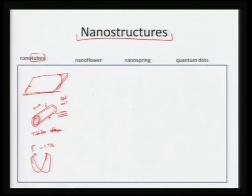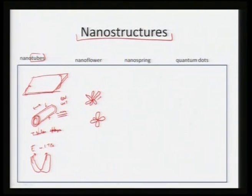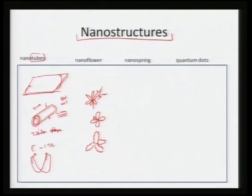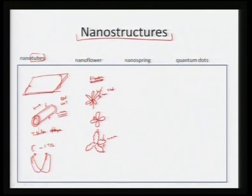Nanostructures can also form something called nanoflowers — with a nucleating point from which many different structures originate, forming rod-like or dendritic structures that look more like a flower. Whether it is a rod shape or a flowery dendritic kind of structure, the thickness of these dendrites is approximately a couple of nanometers. We can see structures that vary — rods, dendritic structures, circular or petal shapes — many different morphologies originating in nanostructures.